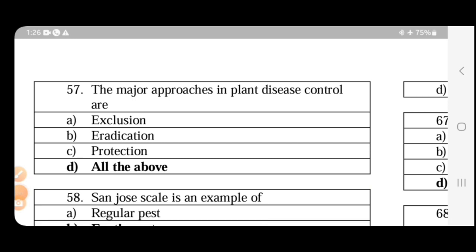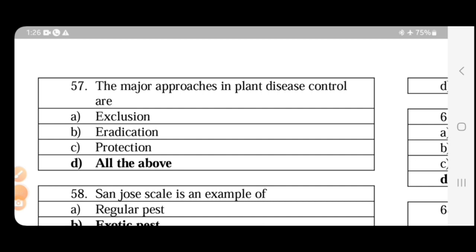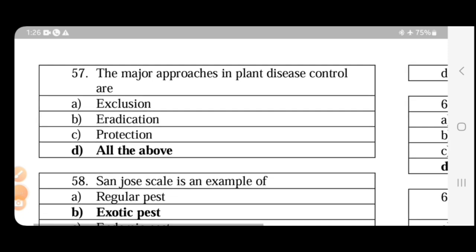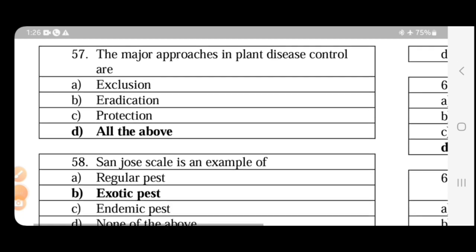The major approaches in plant disease control are exclusion, eradication, protection, all of the above. The answer is all of the above. The most important approaches: first one is avoidance - pathogens will be shipped to avoid crop cultivation. Exclusion is preventing the pathogen introduction in new areas. Eradication is elimination of pathogens. If we use cultural methods or chemicals, then we eradicate. Protection is using targeted chemicals.